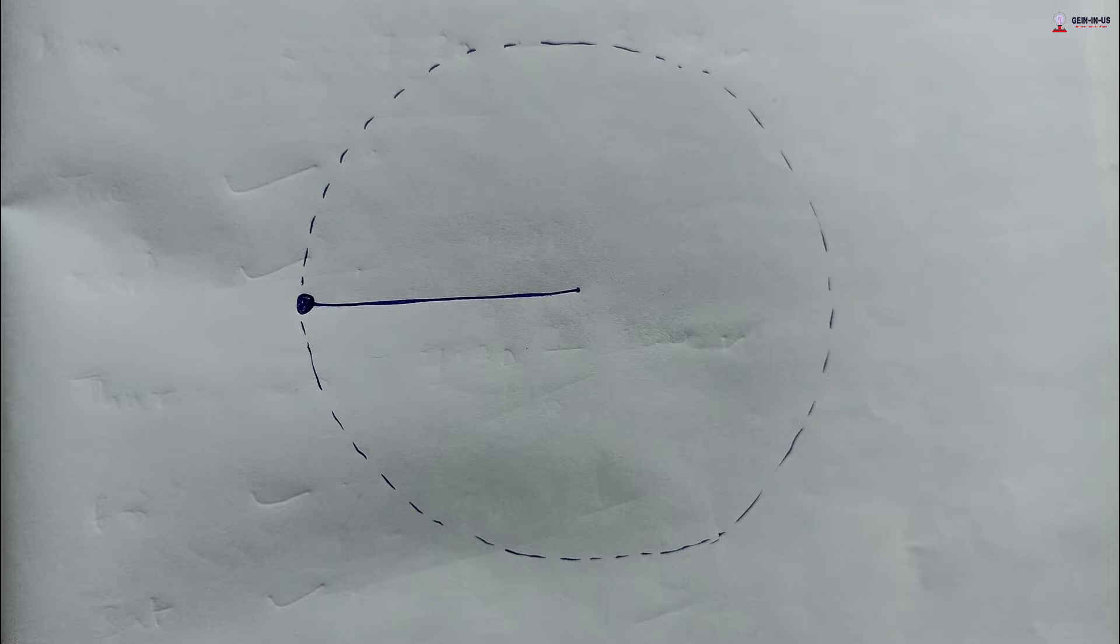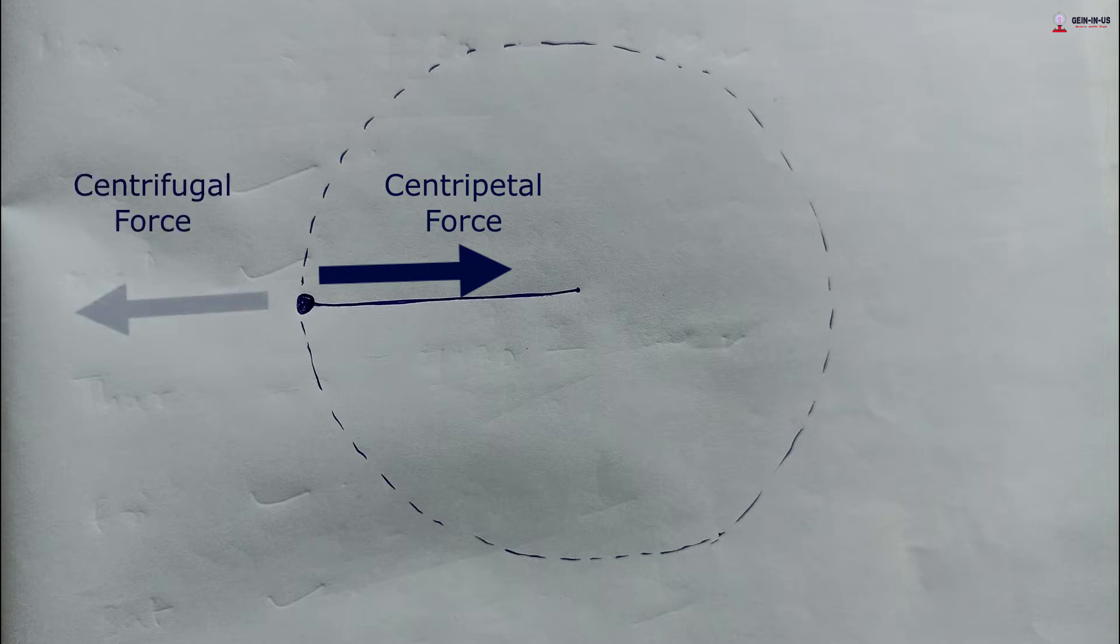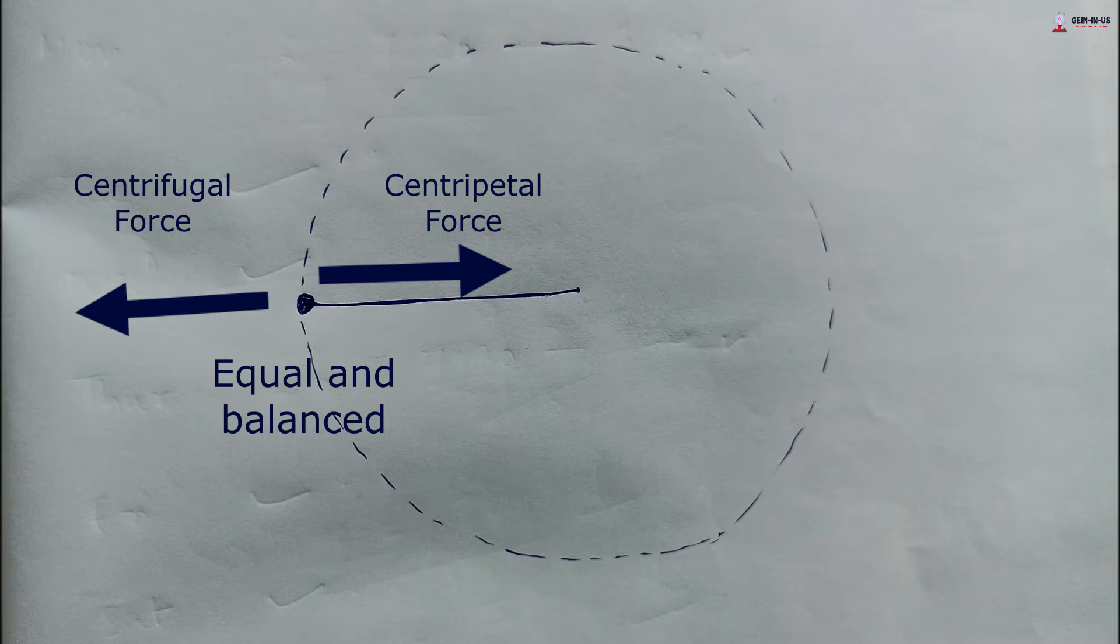When it is moving in a circular path, you can see two forces are acting on it. The first one is centripetal force that is directed towards the center of the circle, and another one is the centrifugal force that is acting on the object directed away from the center of the circle. So these two forces are equal and it is balancing the object to be in the circular path and will not change the path. Neither it will go away, neither it will come inside. So this is the reason the object remains in the circular path.